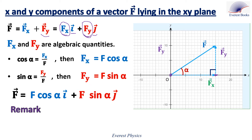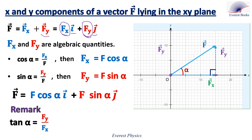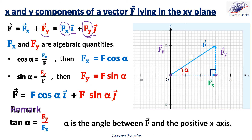Remark: tangent alpha is equal to the opposite over the adjacent. So tangent alpha equals Fy over Fx, where alpha is the angle between the vector F and the positive x axis.